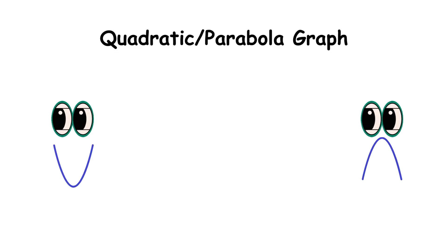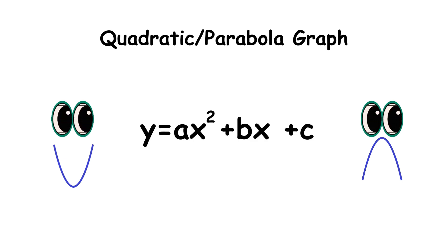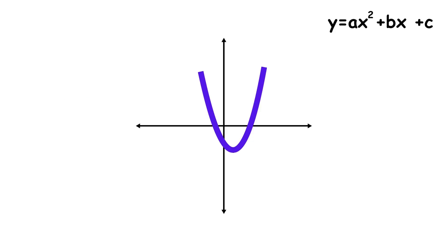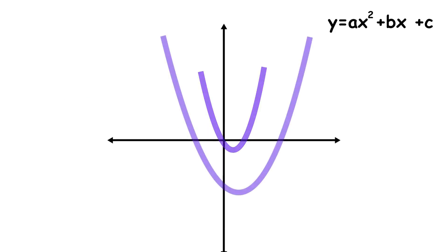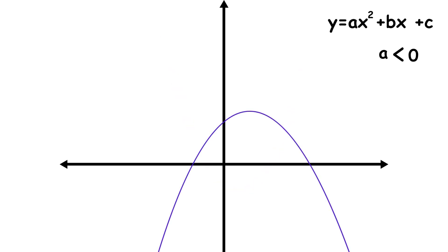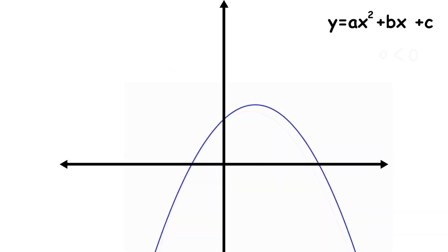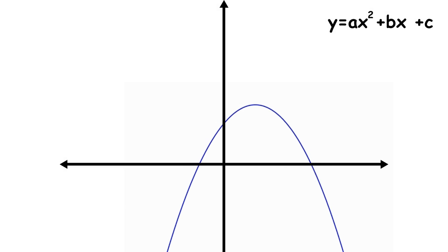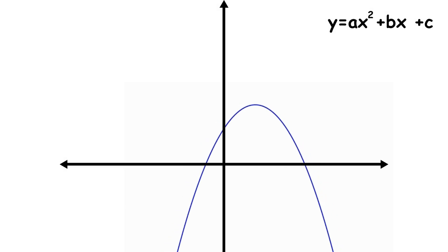A quadratic graph comes from a second-degree polynomial function: y equals ax squared plus bx plus c. Every quadratic graph is a parabola, which is a roughly U-shaped curve. If a is positive, the parabola opens upward; if a is negative, it opens downward. The greater the magnitude of a, the more sharply the parabola bends.